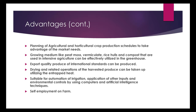Planning of agricultural and horticultural crop production schedules to take advantage of market needs. Growing media like peat moss, vermiculite, rice hulls, and compost that are used in intensive agriculture can be effectively utilized in the greenhouse.